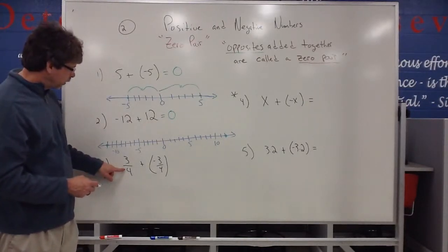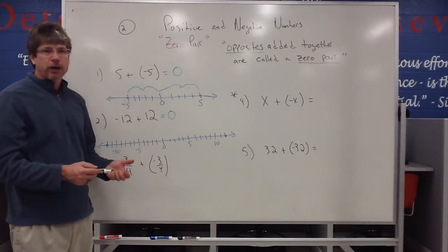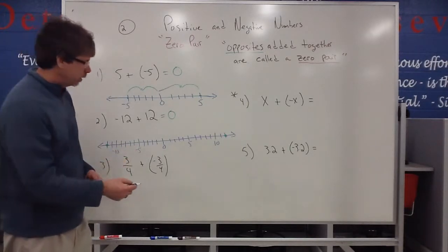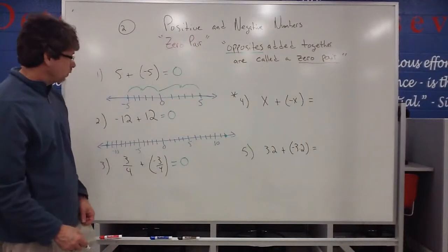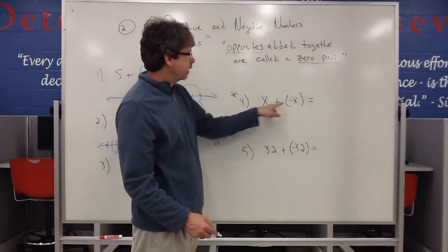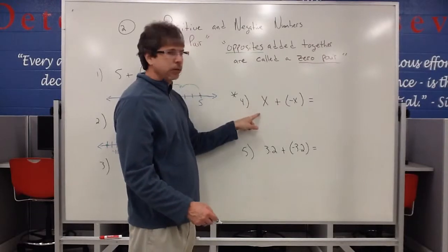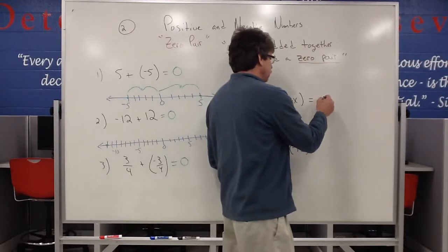When it comes to three-fourths and negative three-fourths, notice how we're adding those two numbers together and they're different in sign. Therefore, we call those a zero pair, and that would end up equaling zero. I can even apply this to letters: x and a negative x. We would call these a zero pair. So whatever x is, and you add the opposite of that x, that's actually going to end up equaling zero.